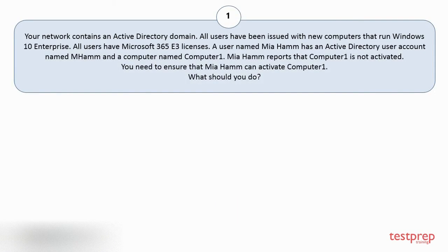Question number one. Your network contains an Active Directory domain. All users have been issued with new computers that run Windows 10 Enterprise. All users have Microsoft 365 v3 licenses. A user named Mia Ham has an Active Directory user account named Mham and a computer named Computer1. Mia Ham reports that Computer1 is not activated. You need to ensure that Mia Ham can activate Computer1. What should you do?